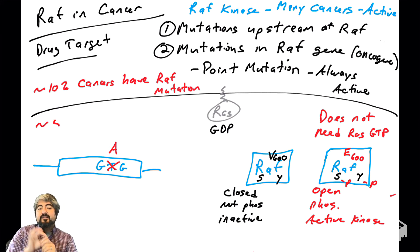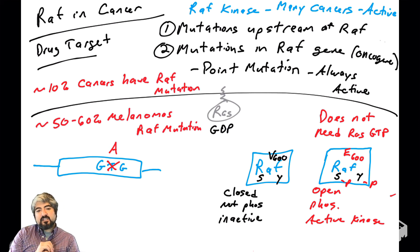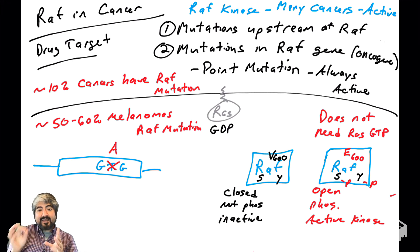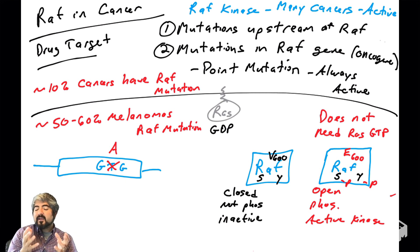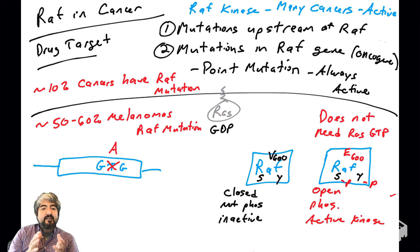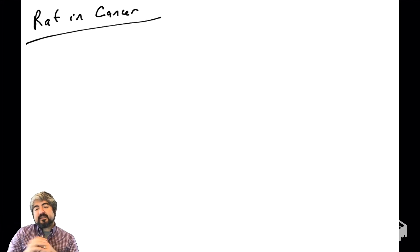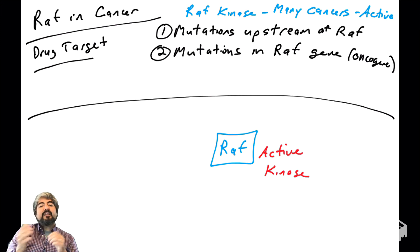RAF point mutations are very common in human cancers — about 10% of human cancers have a mutation in the RAF gene. These are activating mutations that activate RAF's kinase activity. About 50% to 60% of melanomas actually have RAF mutations, very commonly at amino acid 600. It is a key amino acid for maintaining the conformation of RAF, and disrupting it causes RAF to be always active.